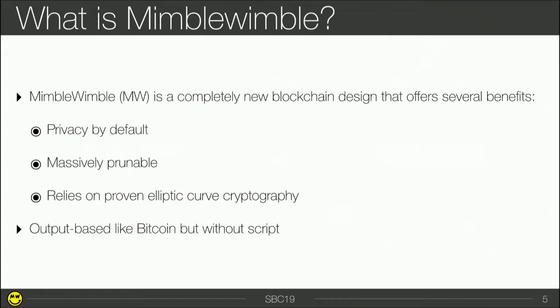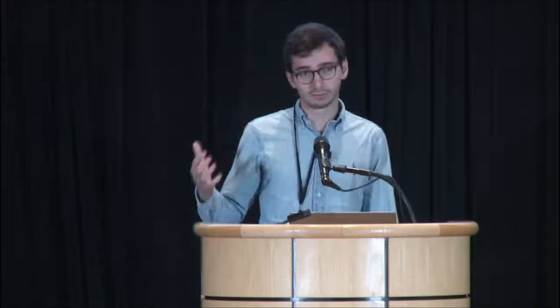When you want to understand the magic of MimbleWimble, you have to look at the transaction level. A MimbleWimble transaction has three parts: inputs, which reference old outputs; outputs, which are confidential transactions plus range proofs; and kernels, which are outputs minus inputs, plus a signature.